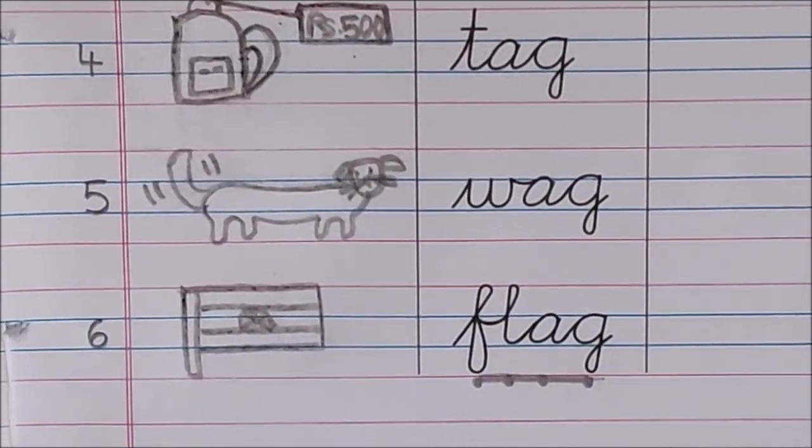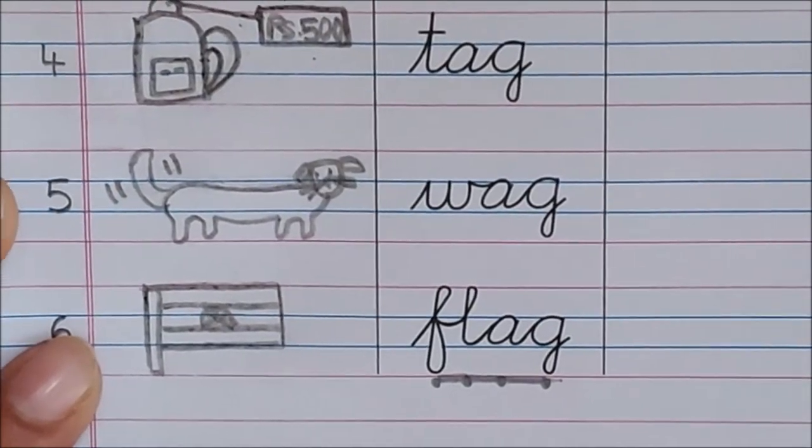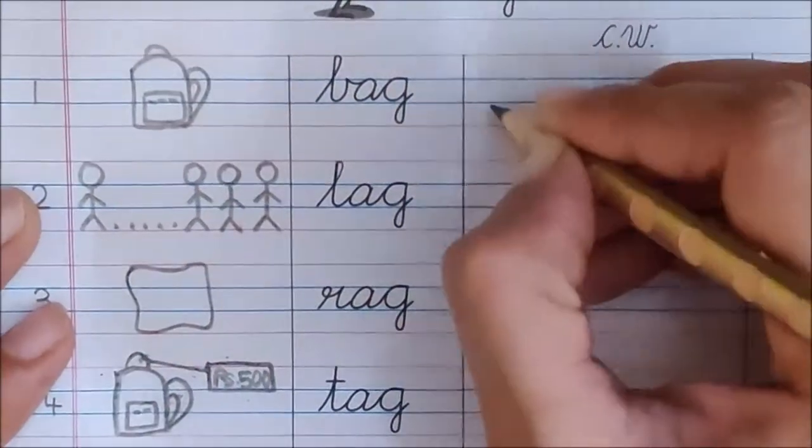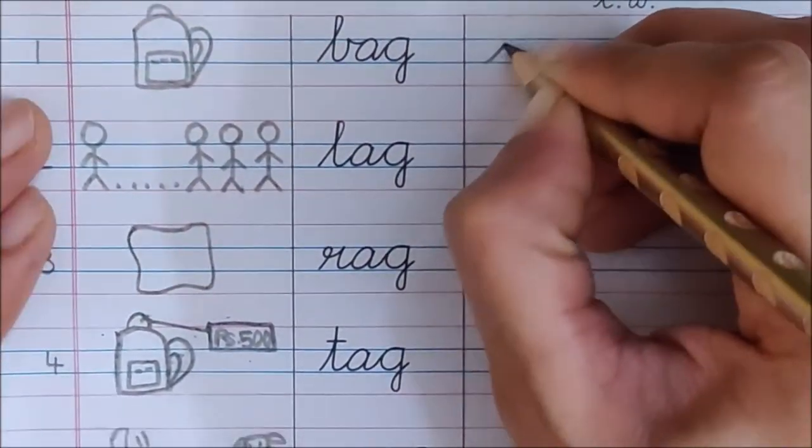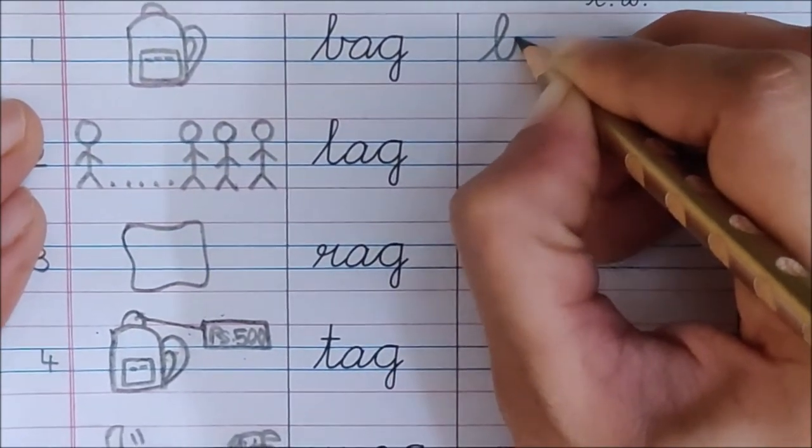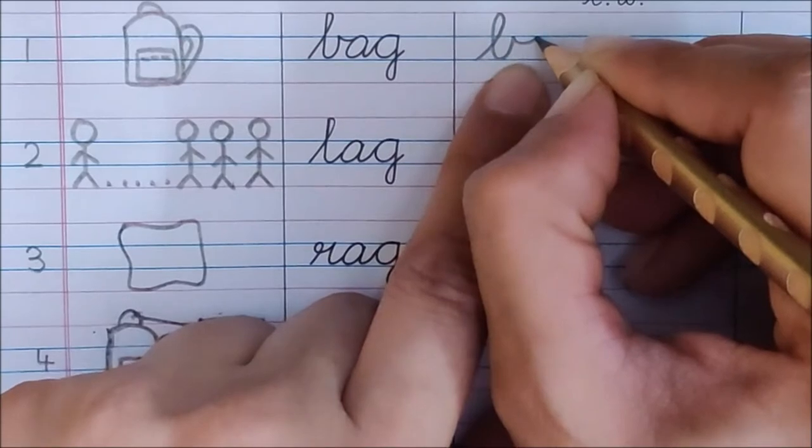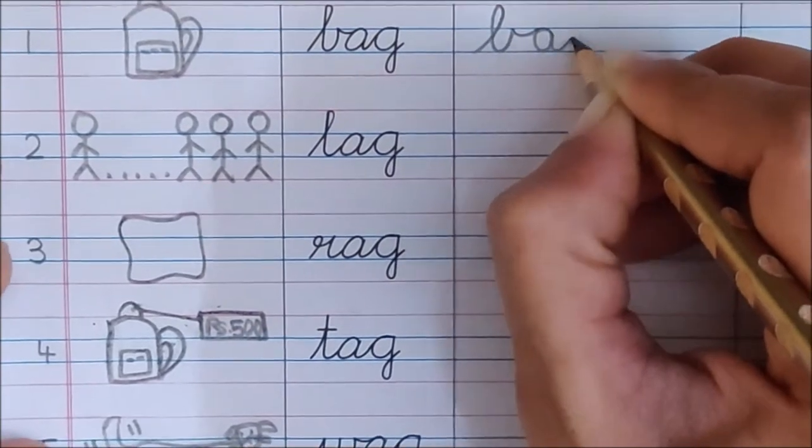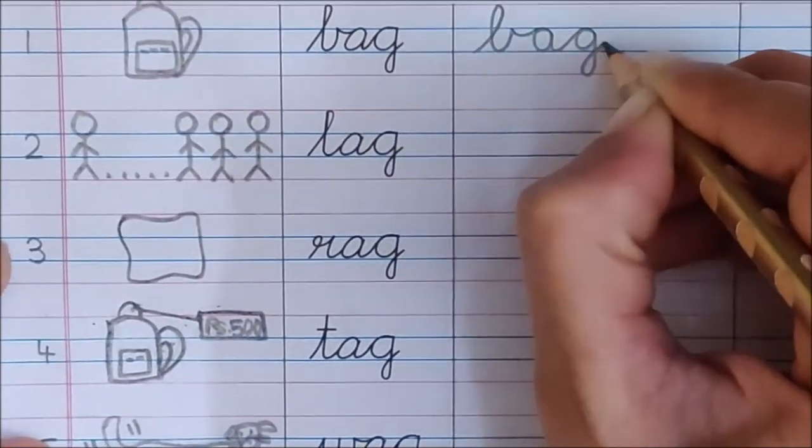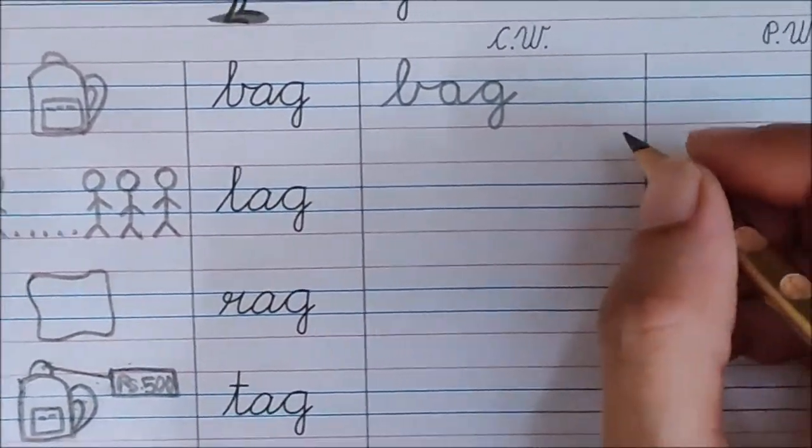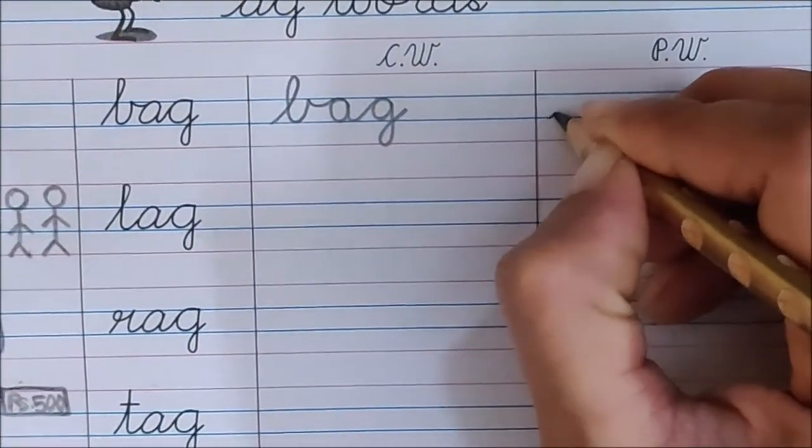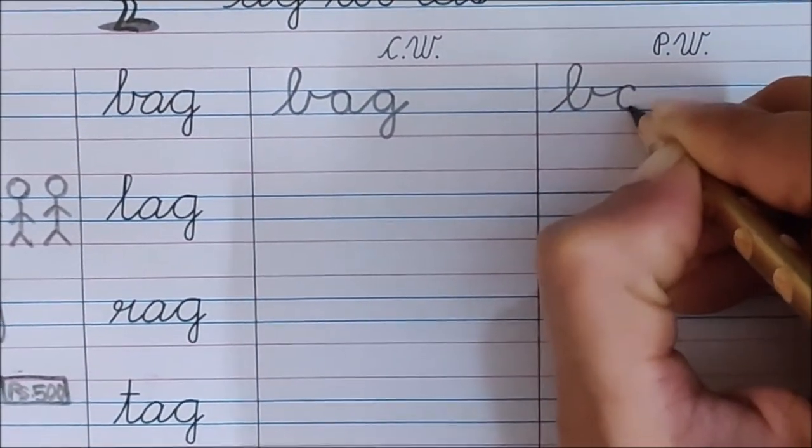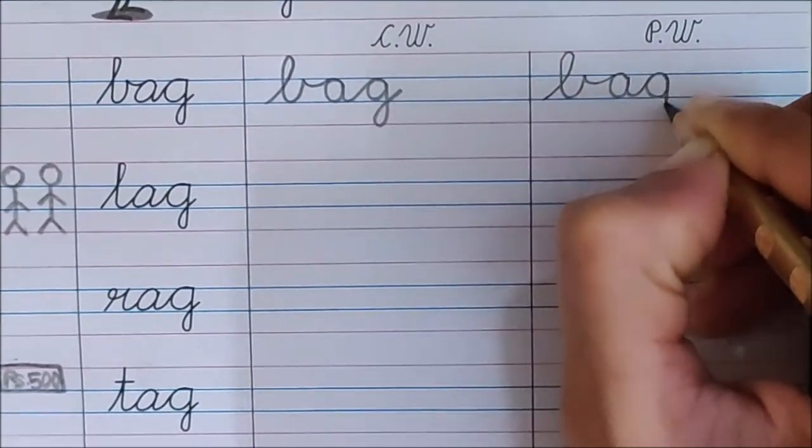Now children, it's time to do writing of all these words. Let us start with the first word. Read with me, B, A, G, bag. So your children, write down beautifully. B. See, the smiley has not touched the lower blue line. Now turn the smiley. A, G, bag. I hope you are saying and writing. We have to write one more time. B, smiley up. A, G, bag.